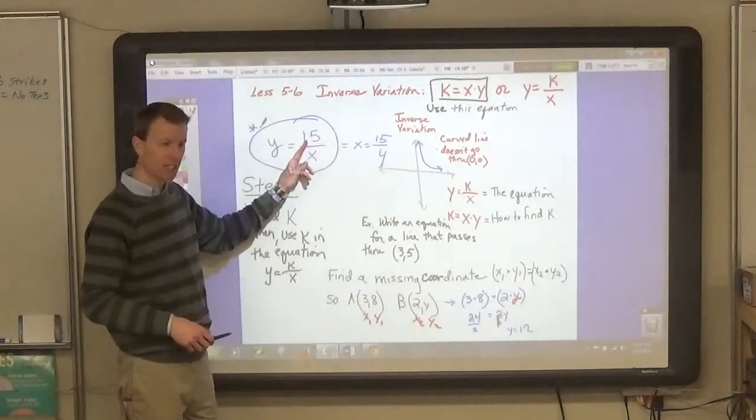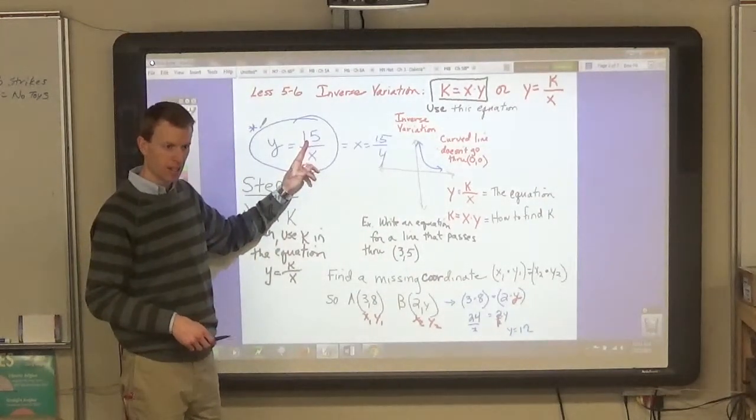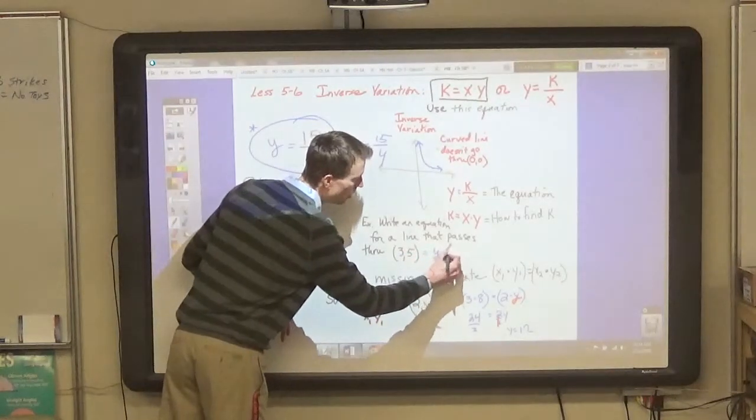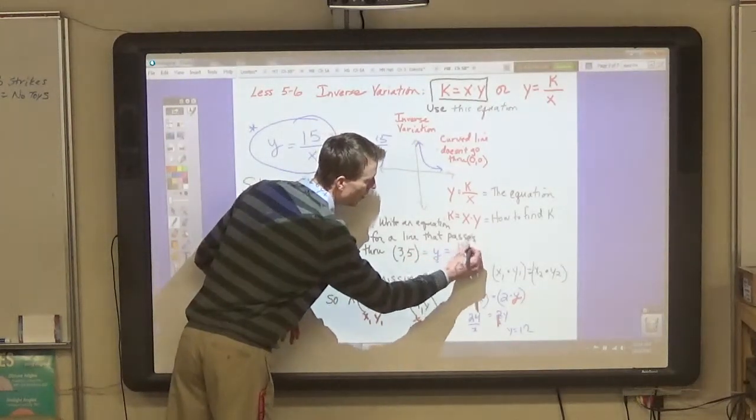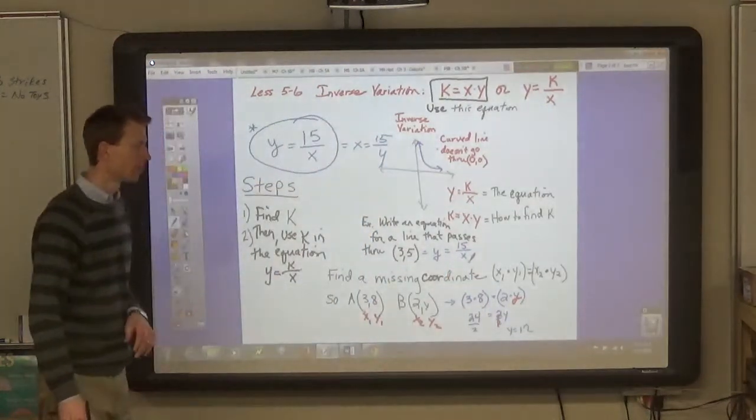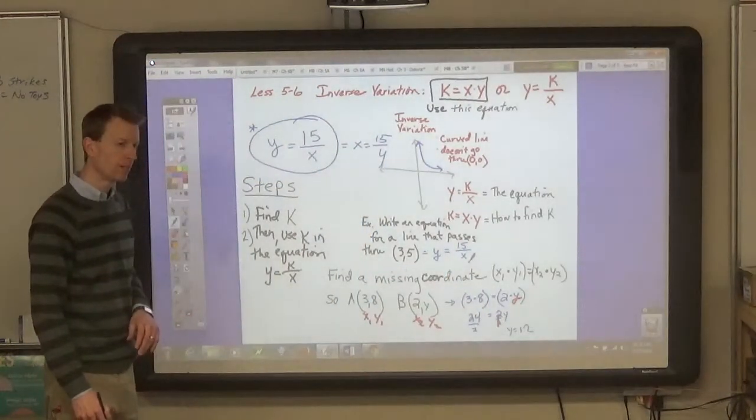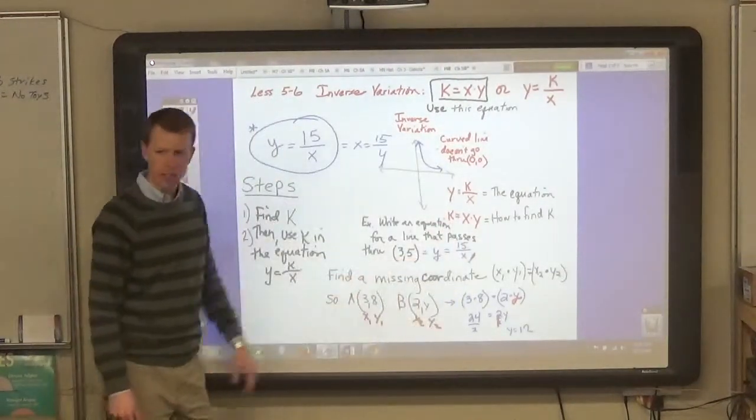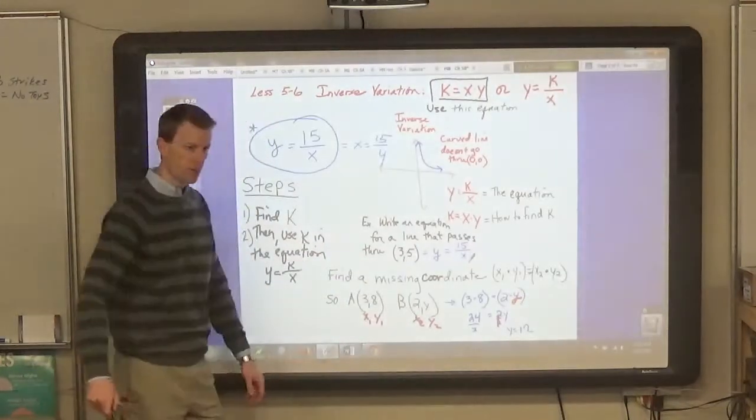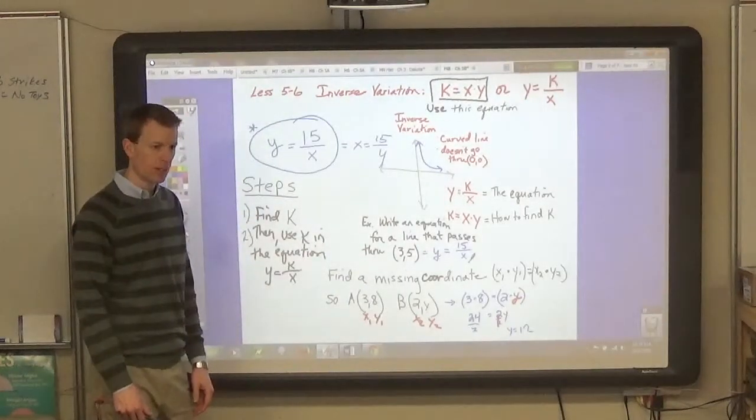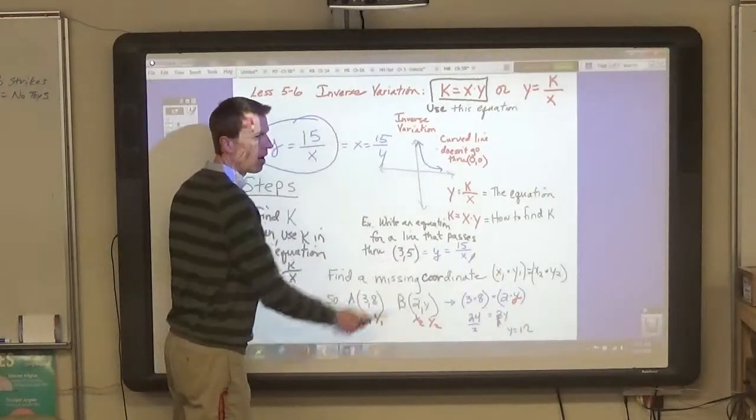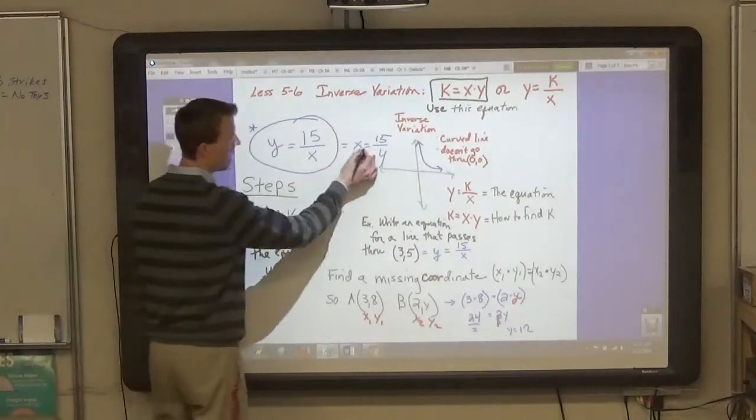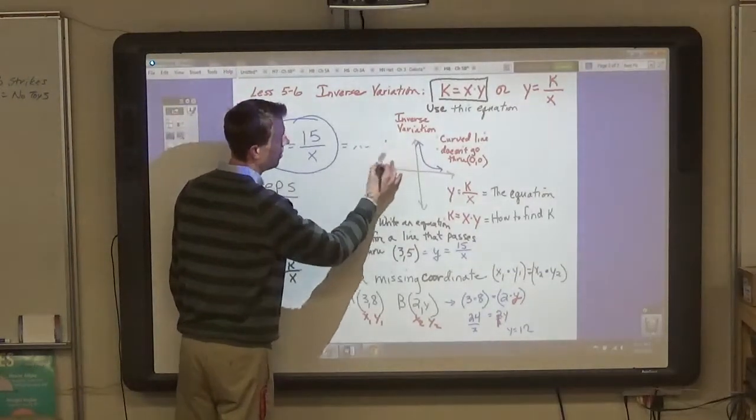So, 3 times 5 is 15. And to write the equation, you have to write it as y equals 15 over x. How did you find k to write the equation? Just multiply 3 times 5. Then to write the equation, you have to start with y and write it as y equals 15 divided by x, not x equals 15 divided by y.